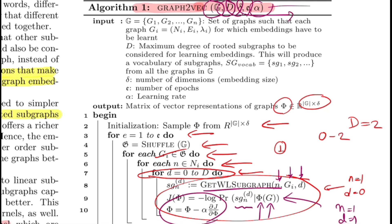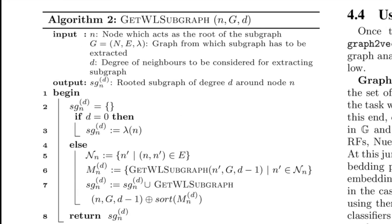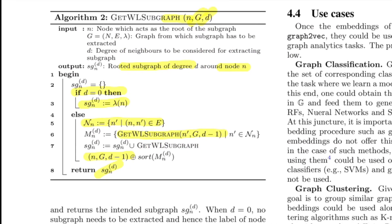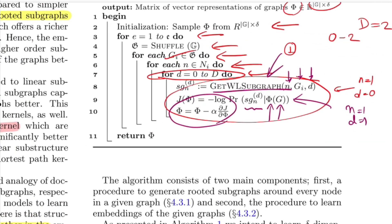The graphWLSubgraph function takes in a central node, graph G, and degree D, and outputs a rooted subgraph of degree D around node N. If D equals 0, it returns the label of the current central root node. Otherwise, for D equal to 1 for example, it performs a breadth-first search to get all neighbors N', then makes a recursive call until it hits the base condition and returns node values. This is simply a BFS to the specified number of hops. Finally, the result is appended with the central node value and returned. Once these subgraphs are obtained, the backpropagation step is applied.